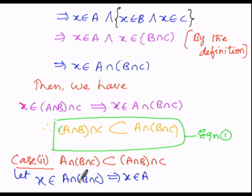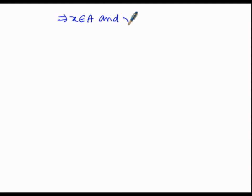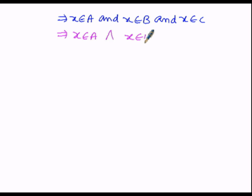So we can write: x belongs to A, and x belongs to B intersection C. In the next logical step, that implies x belongs to A, and within brackets, x belongs to B intersection C is elaborated as x belongs to B and x belongs to C. Removing all brackets: that implies x belongs to A and x belongs to B and x belongs to C — written with the inverted V (∧) symbolic notation.